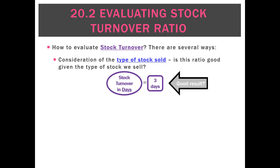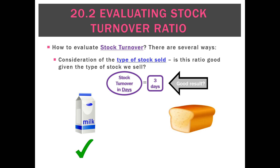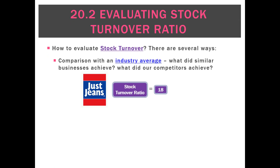What about if we had a stock turnover of three days? If we sold milk, we'd say good — milk's got a use by date of probably five to seven days. If we sold bread though, we'd probably say that's bad. Bread's kind of fresh for one day, maybe two days at most, and that's going to be a negative result.